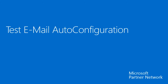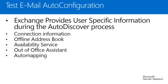The last utility I want to talk about is the test email auto configuration utility. It gives you a look into the auto discover information being returned by the Exchange server. Exchange provides user-specific information during auto discover that is essential to several Outlook features. Connection information is returned — including how to connect via TCP or HTTPS (Outlook Anywhere), the server name, and authentication type. Another feature dependent on auto discover is the offline address book: the OAB URL is returned through auto discover, and if not correctly returned, Outlook won't be able to download the OAB for cached mode clients.